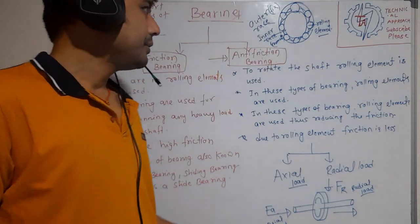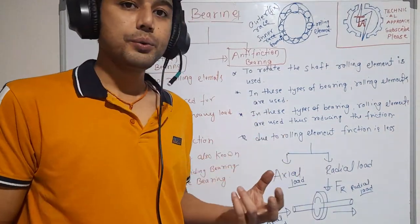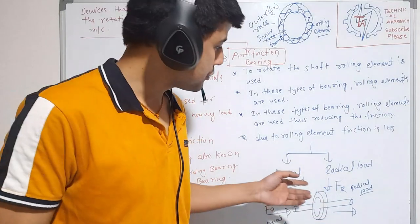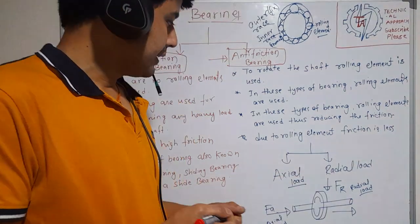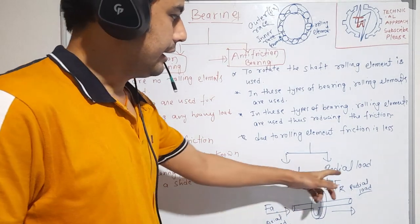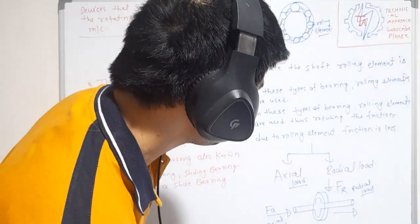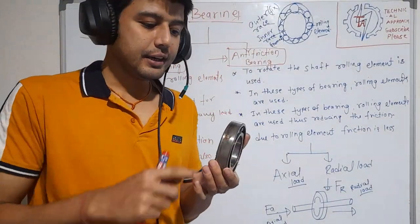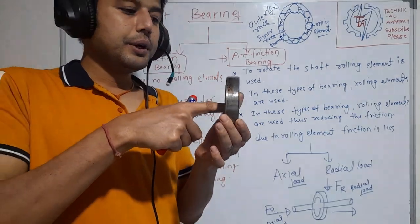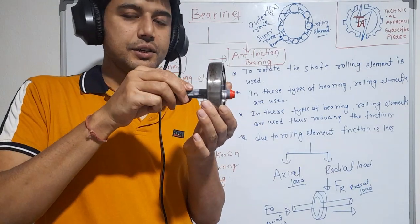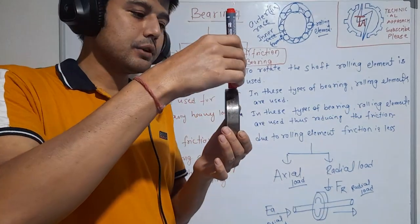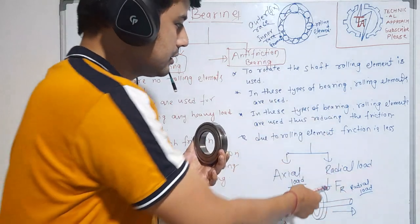Now in this topic I use two terms: axial load and radial load. Suppose my bearing is here and it is running. This is the shaft. The force applied perpendicular to the shaft is called radial load.